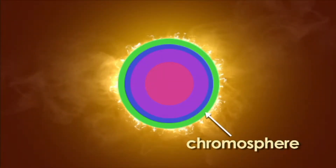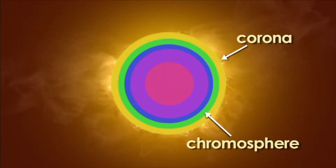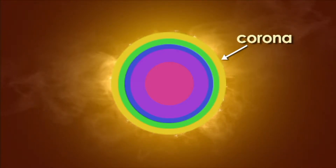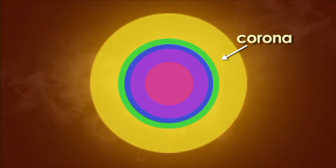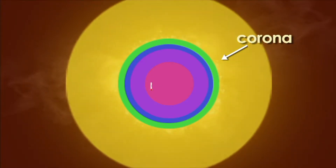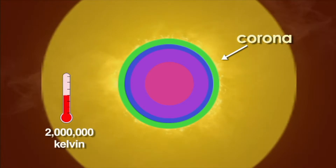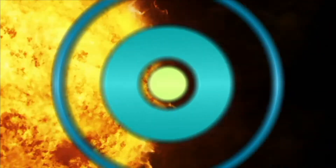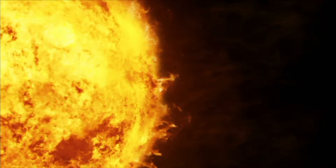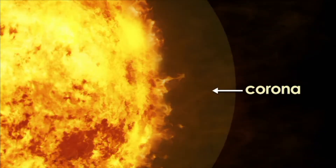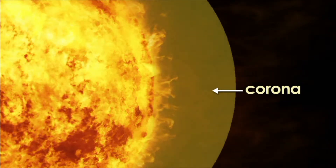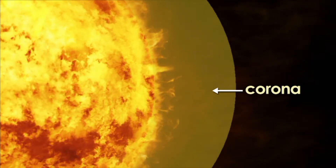Extending just beyond the chromosphere is the sun's corona. The corona is the outermost, largest layer of the sun's atmosphere. It extends millions of kilometers into space and has temperatures up to 2,000,000 Kelvin. The corona is the faintly glowing, extremely hot outermost layer of the sun. Although the corona is not on the sun's surface, it is hotter than the actual sun.